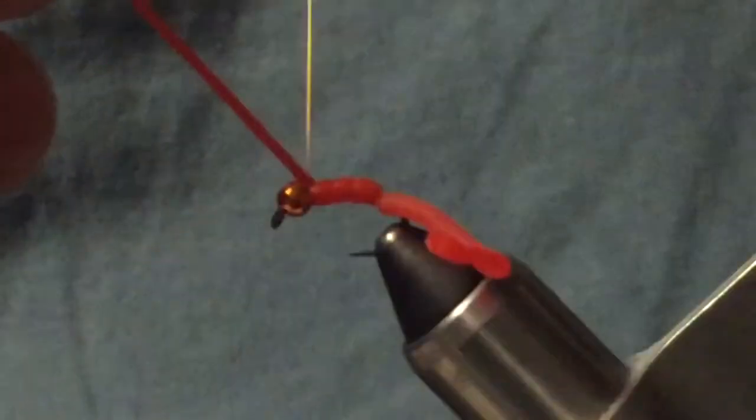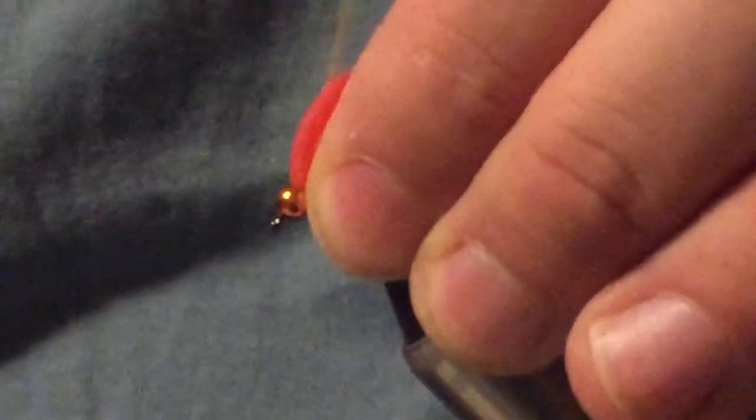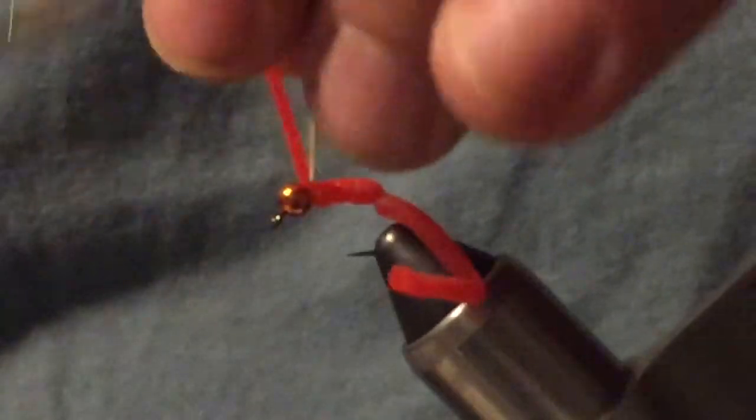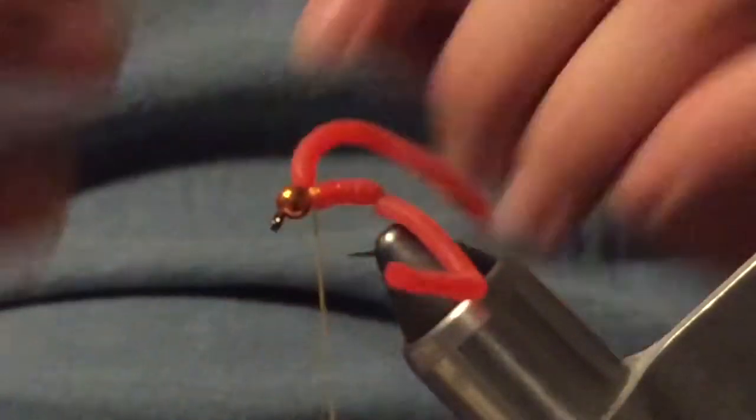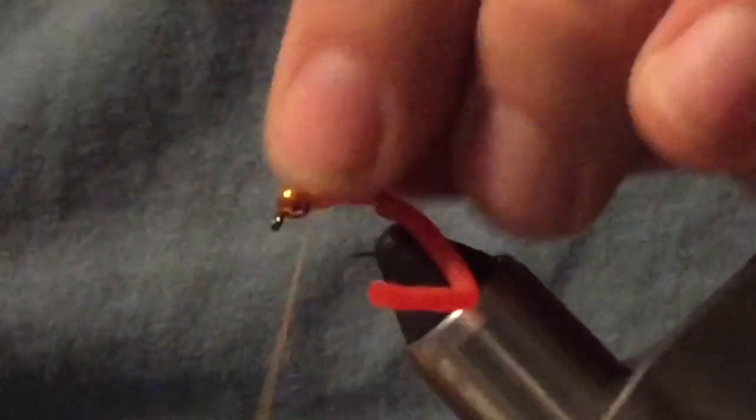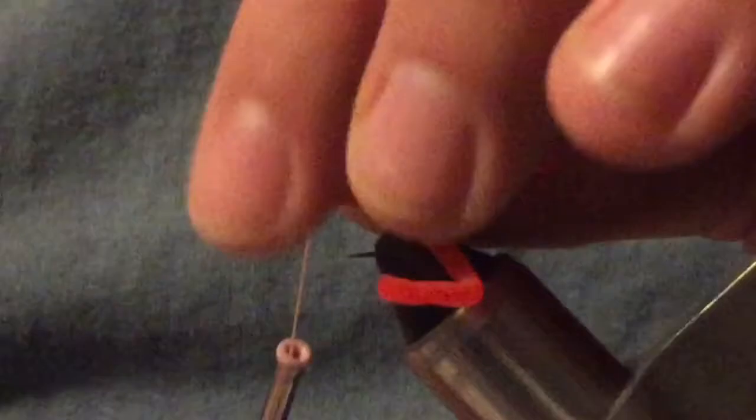You're gonna hold your material up to the front and lower your first thread wrap over, which is light. One, two, three, four. I don't like to use too many thread wraps on this stuff, just enough to hold it. Too many, it does tend to kind of bind and will cut through. After we have that where we want to bring it up, thread right behind the bead.